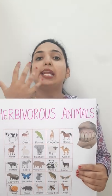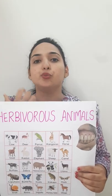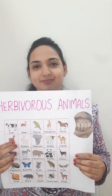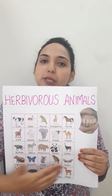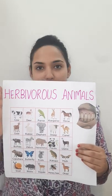Their rough teeth help them in chewing the plant materials properly and absorbing nutrients from them. So that was about herbivorous animals. Now the second category of animals is carnivorous.